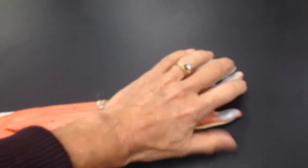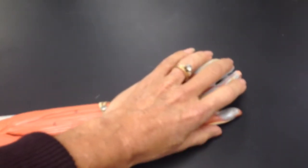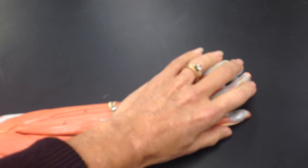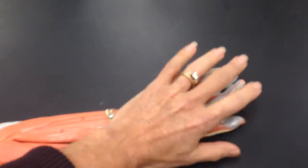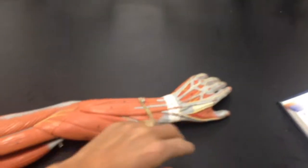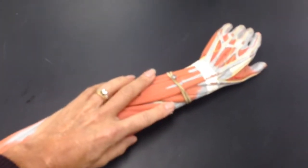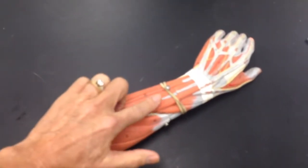Remember that when you're looking at the arm, the thumb side is the radial side, the pinky side is the ulnar side, this is extension, and this is flexion. So everything on this side is an extensor, and we just look at where these muscles are going.